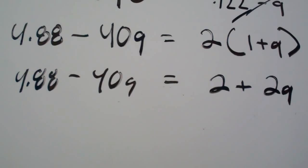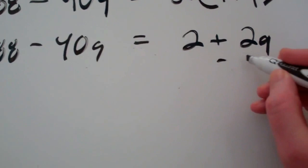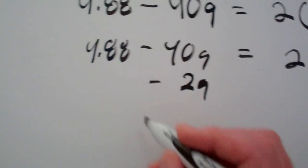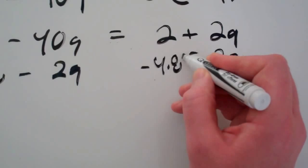So next thing we have to do is get the G's on one side and the regular numbers on the other. So what we're going to do to this is we're just going to subtract 2G here. So subtract 2G here. Okay. And then subtract 4.88 here and subtract 4.88 here.